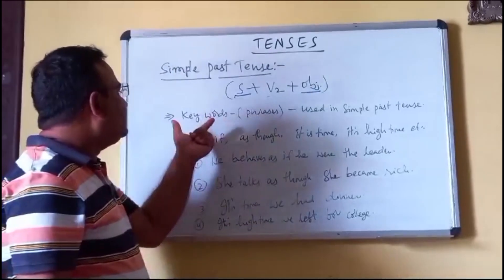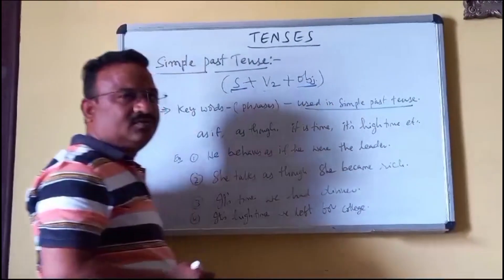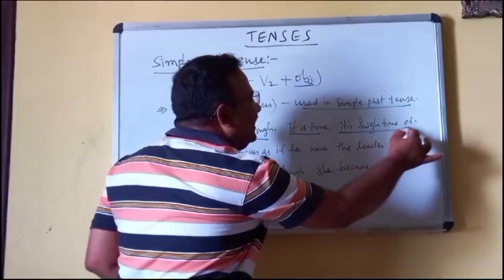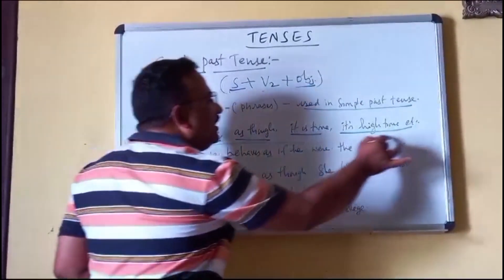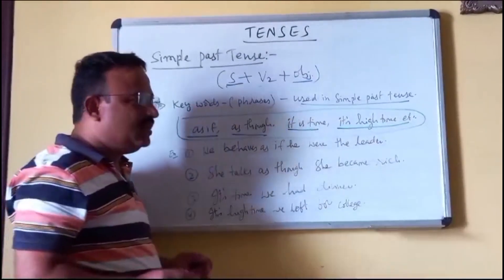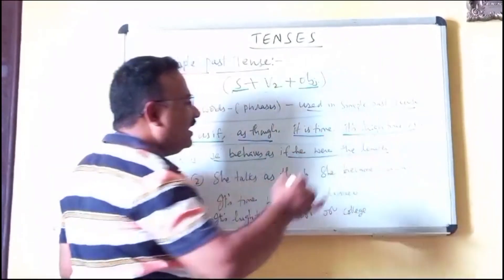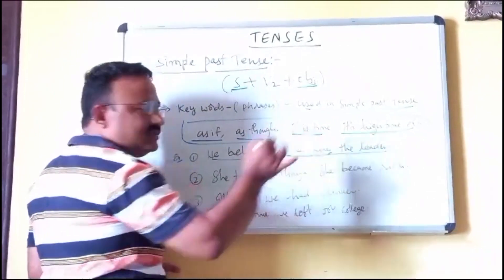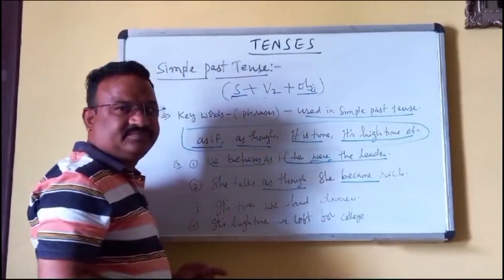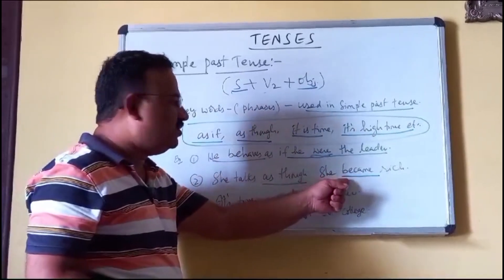Now, some keywords or phrases used in simple past tense: 'as if,' 'as though,' 'it's time,' 'it's high time.' Wherever you see these keywords, use simple past tense. For example: 'He behaves as if he were the leader' — past tense. 'She talks as though she became rich' — 'as though' is the keyword, so we use 'became,' which is past tense.